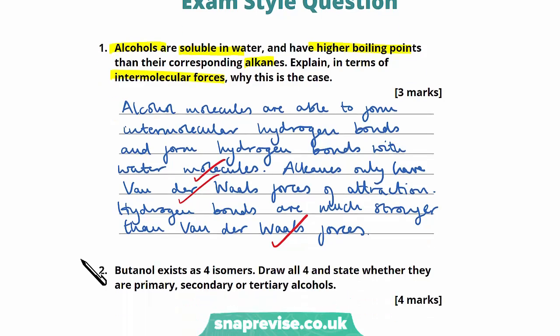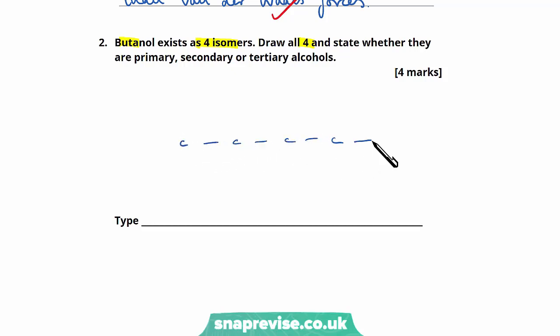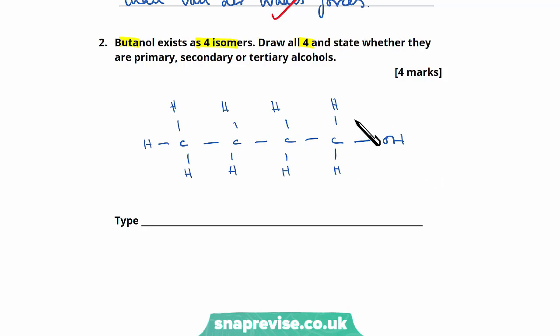Question two: Butanol exists as four isomers. Draw all four and state whether they are primary, secondary or tertiary alcohols. Let's begin with the most straightforward of our isomers. Bute is telling us there are four carbons, so we have a four-carbon chain. We place the alcohol functional group on our first carbon and fill in the rest of our hydrogens. We can see this is a primary alcohol as the carbon our functional group is attached to is only attached to one alkyl group.